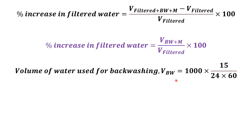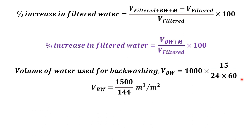Volume of water used for backwashing: the rate of backwashing is 1000 m³/day/m², and the duration is 15 minutes. Converting 15 minutes to days: 15 ÷ (24 × 60). Multiplying: volume of water used for backwashing = 1000 × (15/1440) = 1500/144 m³/m².